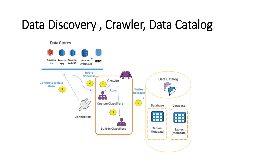For example, if you have some unstructured or semi-structured data sitting in an AWS S3 bucket or your data lake, the AWS Glue Crawler can crawl through that data, infer the schema for you, and create a catalog table in the Glue Data Catalog. The first step is to create a crawler, establish a connection with S3, and then the crawler infers the schema and creates a table in the Glue Catalog.